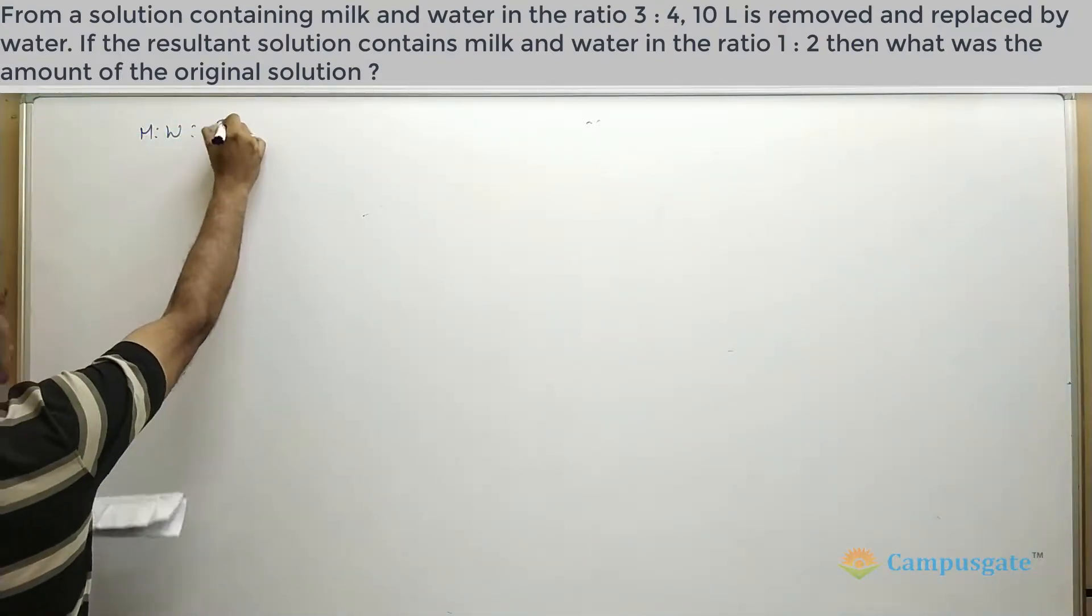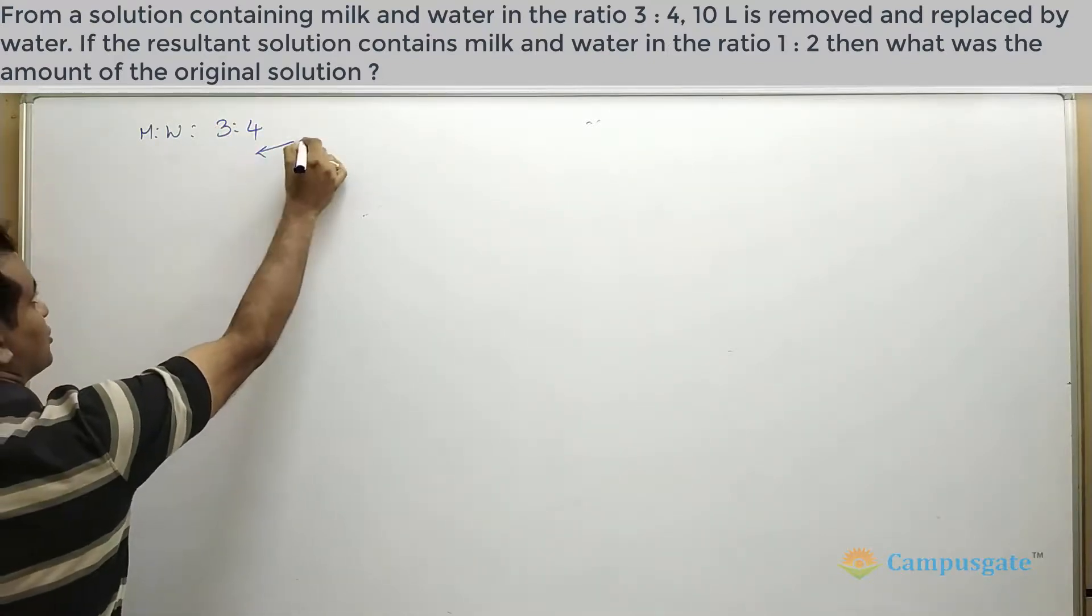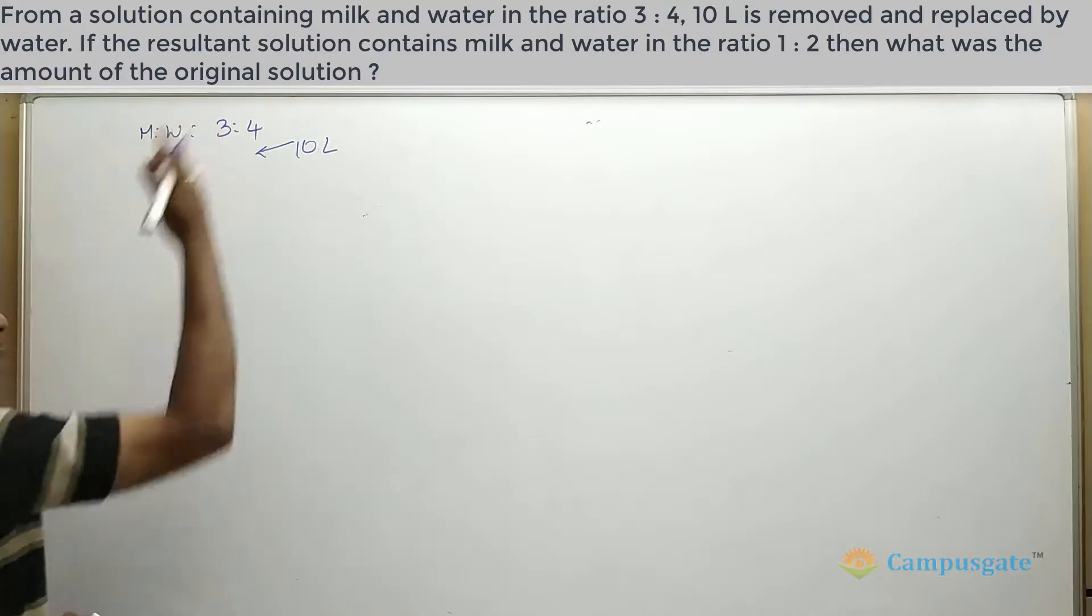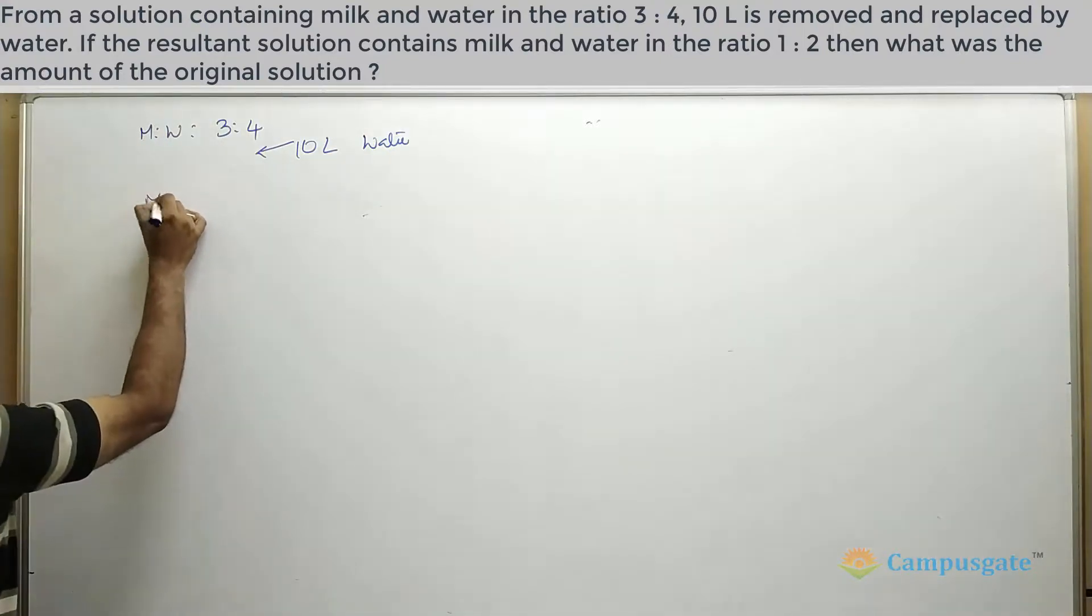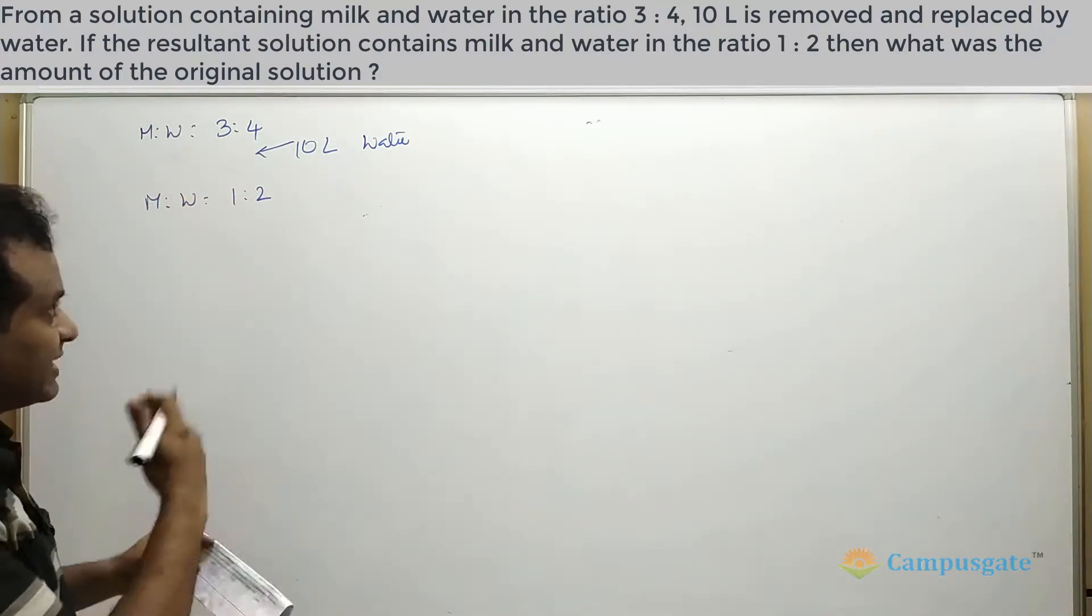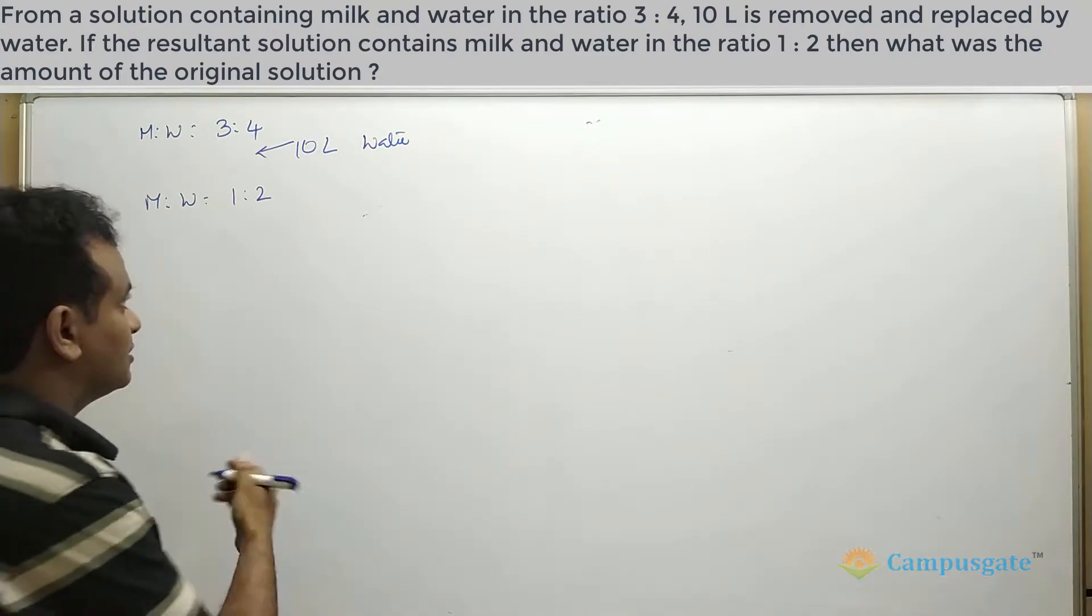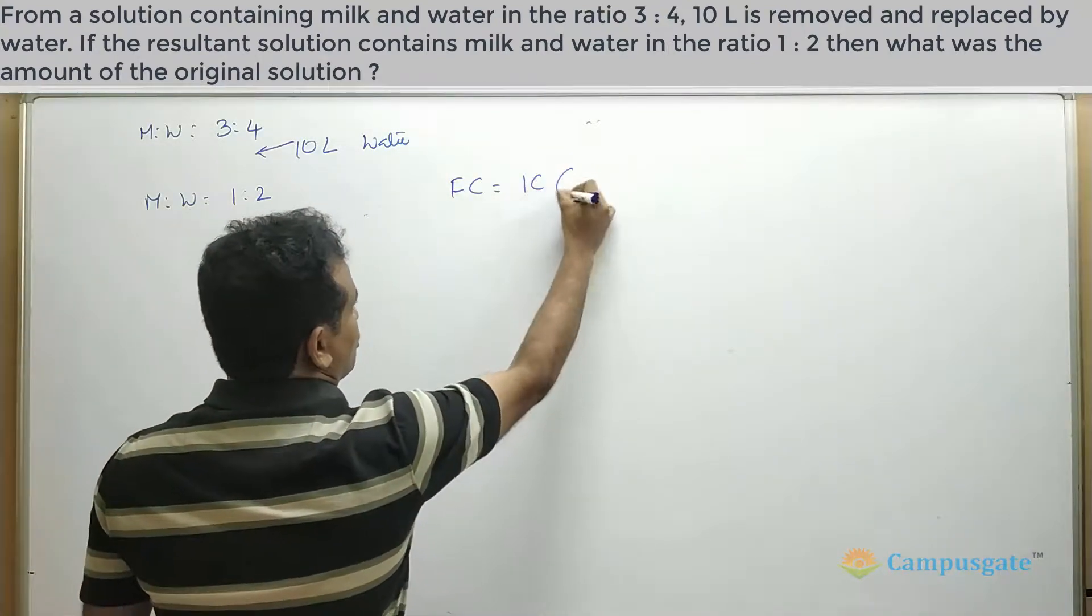So let us note down these things. Initially milk and water are in the ratio 3 is to 4. After the addition of 10 liters - initially we remove 10 liters and we added 10 liters of water to it - then again milk and water are in the ratio 1 is to 2. So let us apply the replacement formula here. Final concentration equals initial concentration times 1 minus x by v whole power n.